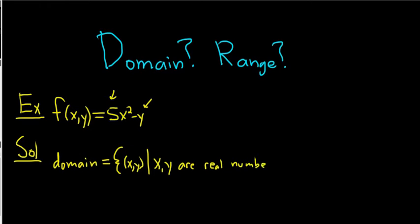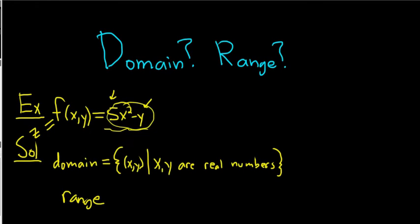So they could be any numbers — there's no restriction on x and y, because there's no division by zero, no square roots, nothing funky. The range is all the possible outputs. When thinking about the range, think of this as your z, where z is an element in the range. This could be any number — you can get any number from this. So the range here would be negative infinity to infinity.